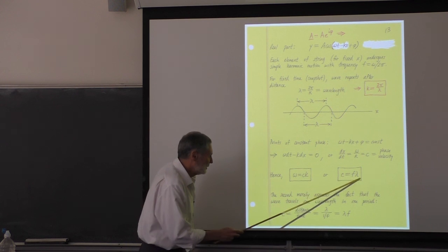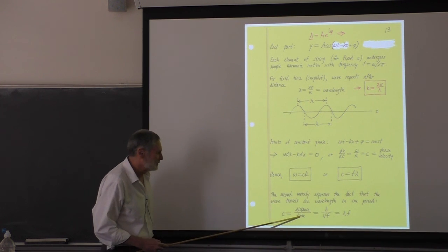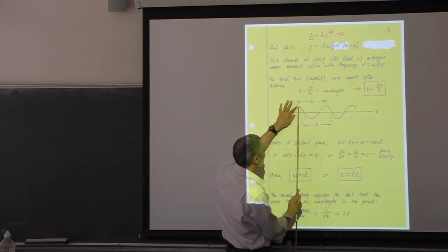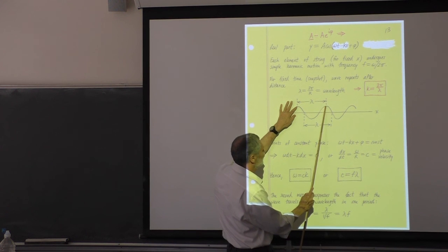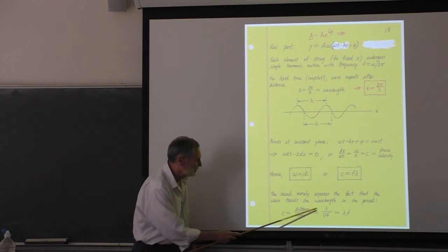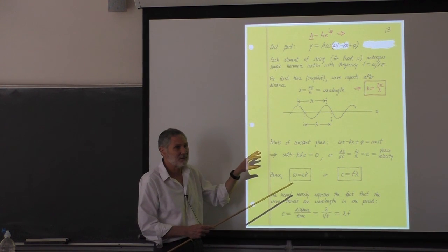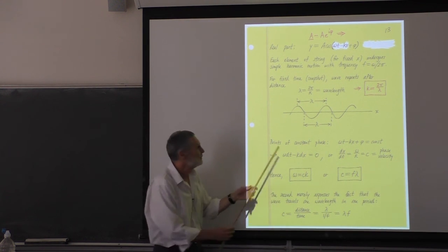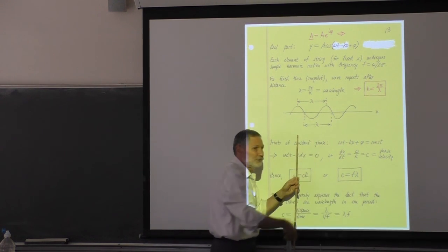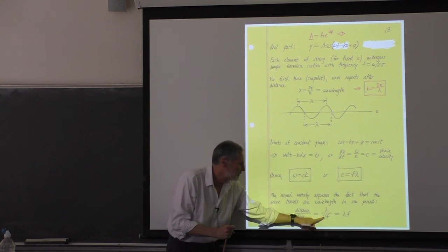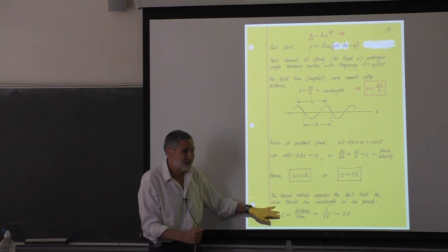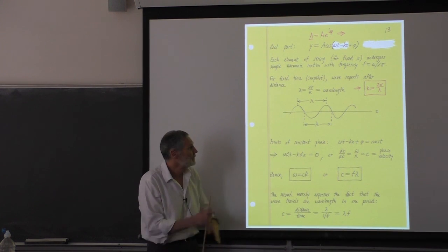What is c equals f lambda? It's just speed equals distance over time. If you watch a crest travel from one position to the next crest, it moves a distance of one wavelength in one period. The period is one over the frequency, so you get c equals f lambda. There's absolutely no mystery — it's just speed is distance over time.